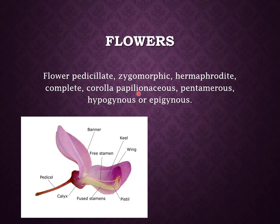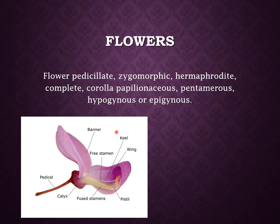The corolla is papilionaceous. Papilionaceous means the vexillary aestivation. Pentamerous flowers — pentamerous means five petals and five sepals. Both hypogynous and epigynous conditions are present in the flowers of Papilionaceae. Hypogynous means when the ovary is superior; the flower is called hypogynous. When the ovary is lower in position relative to the sepals, corolla, or petals, the ovary condition is called epigynous. So, flowers are complete, hermaphrodite, zygomorphic, and hypogynous or epigynous.